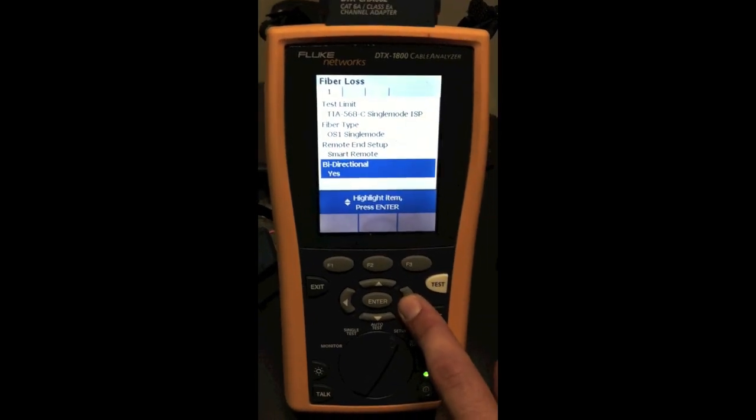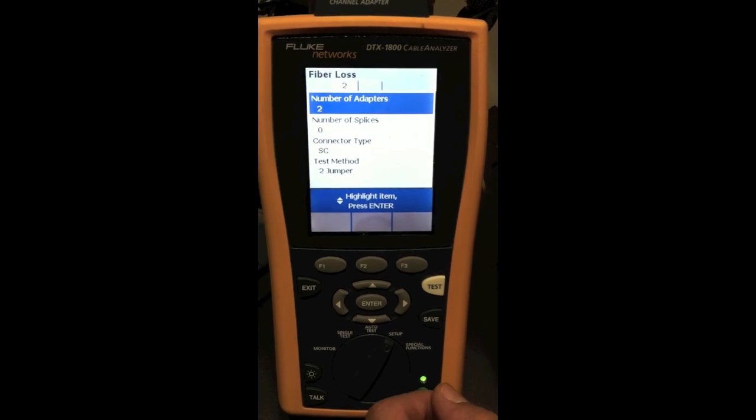Other things in this setup that you want to check for are under tab 2 which you can get access by scrolling over and the number of adapters that we have here. This comes into play when we're testing through multiple patch panels that we have more than one adapter that we're testing through. This would allow the unit to not confuse the data as it comes back to the tester. Number of splices. If you have splices in the section of cable that you're testing you want to also input this number into the unit so it can compensate for the amount of loss of the splice.